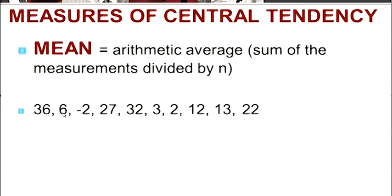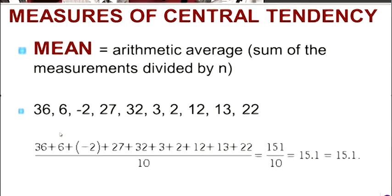So here's the data set: 36, 6, negative 2, 27, 32, 3, 2, 12, 13, and 22. So to find the mean, we're going to just add up all of those values and divide by however many there are, which in this case is 10.